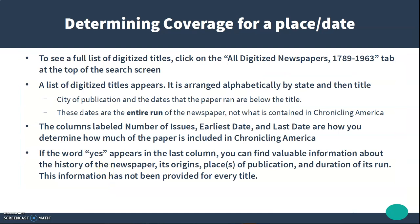Let's talk about determining coverage for a particular place or date in Chronicling America. You can see a full list of digitized titles by clicking on the 'All Digitized Newspapers, 1789-1963' tab at the top of the search screen. A list of digitized titles appears, arranged alphabetically by state and then title. The city of publication and the dates that the paper ran are below the title — these dates are for the entire run of the newspaper, not just what is contained in Chronicling America.